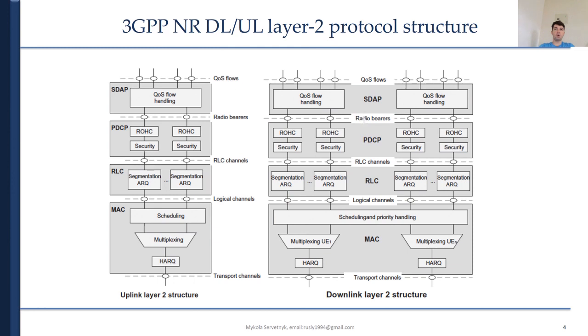The layer 2 of NR is divided into MAC, RLC, PDCP, and SDAP sublayers. The SAP, or the interface between two adjacent protocol layers, is marked with a circle at the interface between the sublayers in the figure. The interface between the physical layer and the MAC sublayer provides the logical channels. The physical layer provides transport channels to the MAC sublayer.